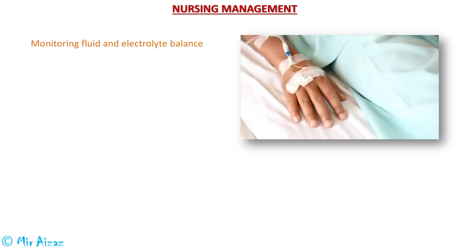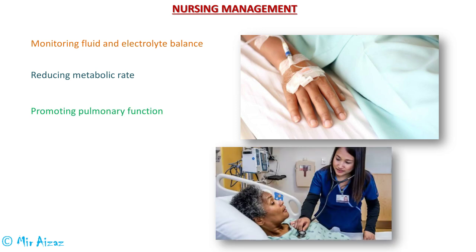For nursing management, first we have to monitor the fluid and electrolyte balance of the patient. Because of the serious fluid and electrolyte imbalances that can occur with AKI, the nurse monitors the patient's serum electrolyte levels and physical indicators during all phases of the disorder. To reduce the metabolic rate, bed rest may be indicated to reduce exertion. Attention is also given to pulmonary function; the patient is encouraged to cough and take deep breaths frequently to prevent atelectasis and respiratory tract infections. Maintenance of asepsis with invasive lines and catheters is essential to minimize the risk of infection and increased metabolism.